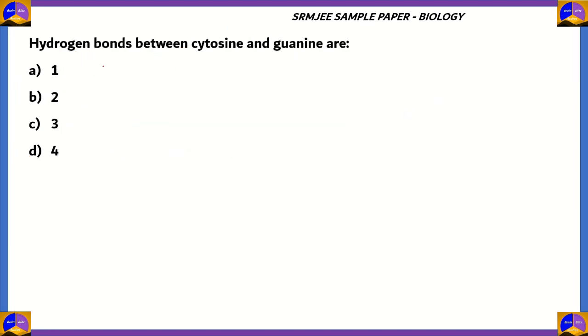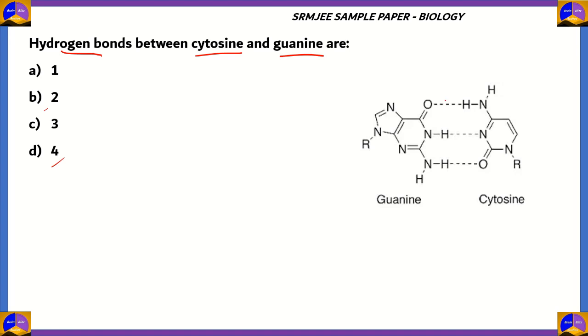Now here lies the final question of this episode. The hydrogen bonds between cytosine and guanine are option A1, option B2, option C3, option D4. So let's look at a bond between guanine and cytosine. The bonds which are dotted, these are what we call hydrogen bonds between two molecules. So these are intermolecular hydrogen bonds.